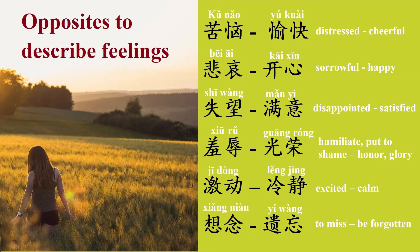Opposites to describe feelings. 苦恼, distressed. The opposite of 苦恼 is 愉快, cheerful. 悲哀, sorrowful. The opposite of 悲哀 is 开心, happy.